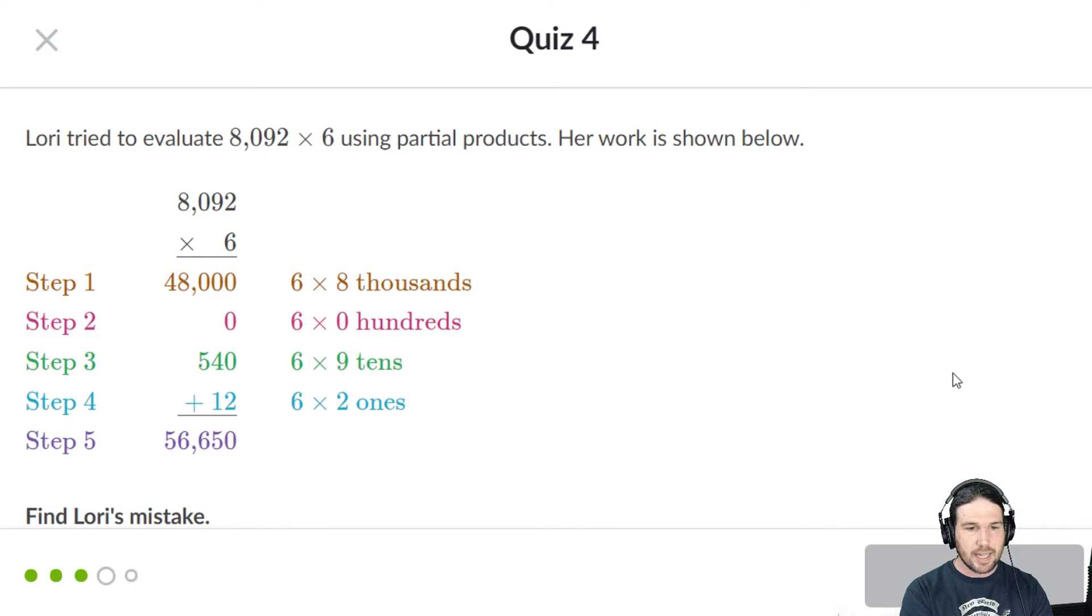Step 3, 6 times 9 tens is 540. And then 6 times 2 ones is 12. It looks to me like everything there is fine, but it can't possibly be right because this 2 here, which is correct, right? 6 times 2 is indeed 12. It should be carried here.